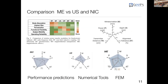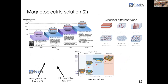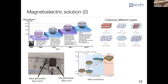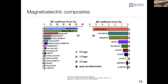It is therefore necessary to develop a numerical tool for predicting the performance of composites. Looking at the evolution of magneto-electric composites, we have a long history of classical types composed of different structures — specific layer structures, 0-3 type with nanoparticles inside the element. At GYPS we developed different composites: a first generation of a few cubic centimeters and a new generation of smaller composites.